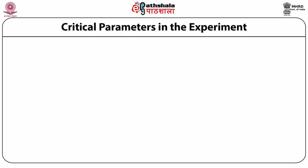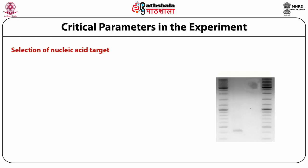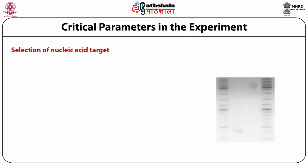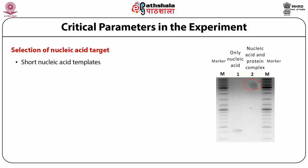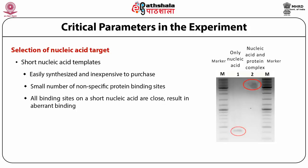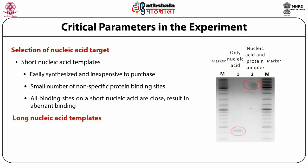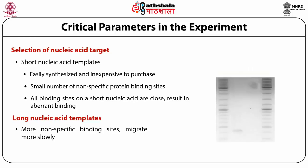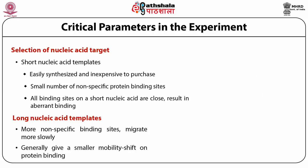There are certain critical parameters in this experiment. The first is the selection of the nucleic acid target — what is the actual size of the nucleic acid template? It could be short or long. Short fragments are easily synthesized and inexpensive to purchase, with a smaller number of nonspecific protein binding sites. However, binding sites on short fragments are in close proximity and can result in aberrant binding. For long nucleic acid templates, there are more nonspecific binding sites, migration is slower, and they generally give a smaller mobility shift on protein binding.